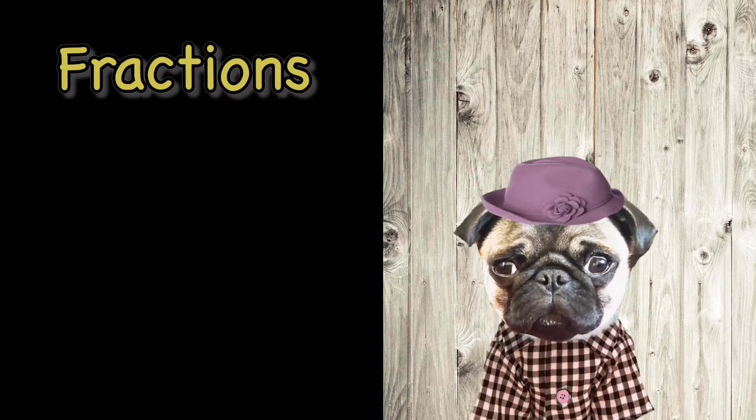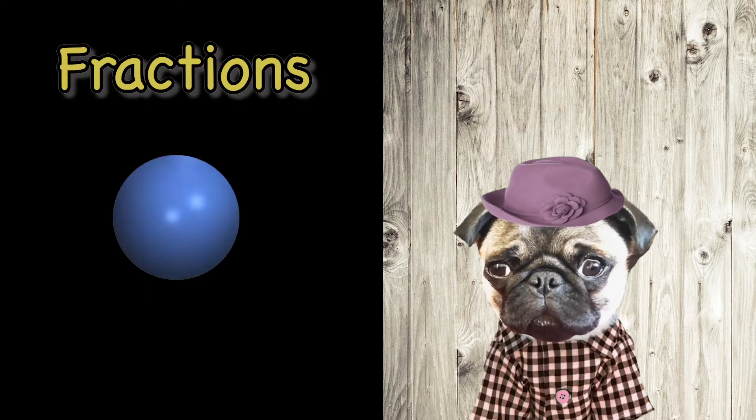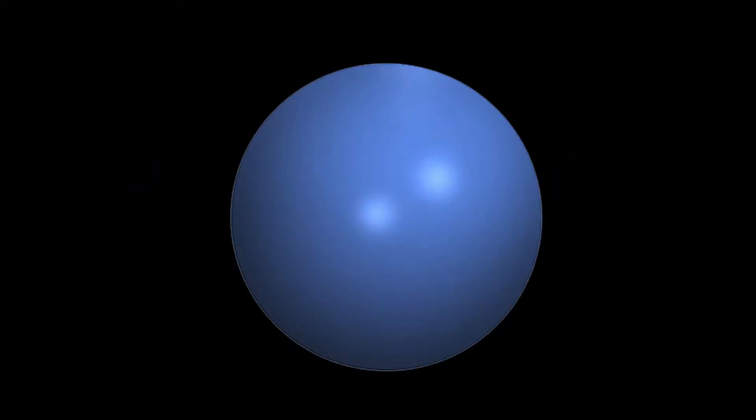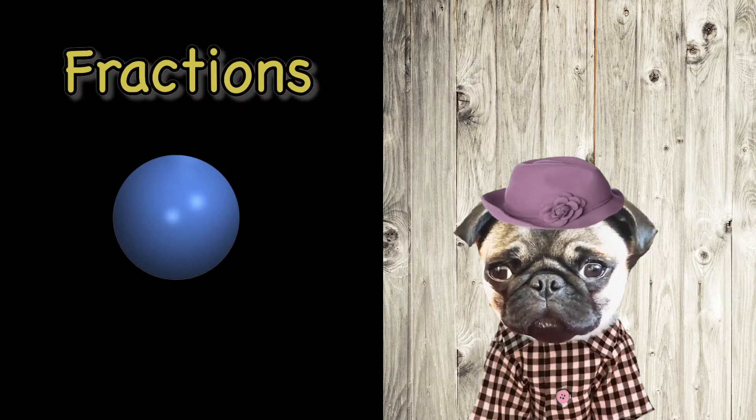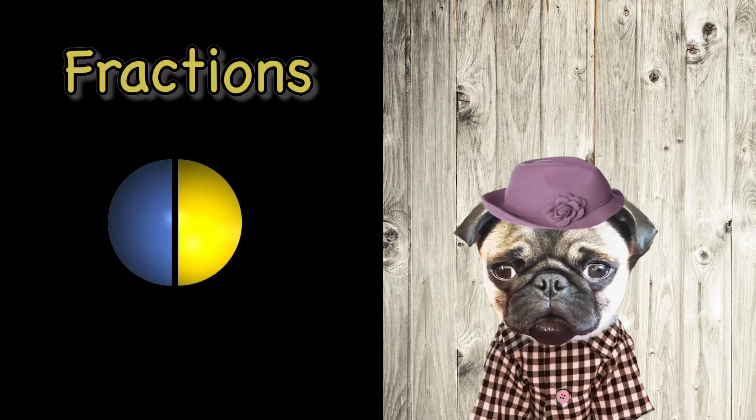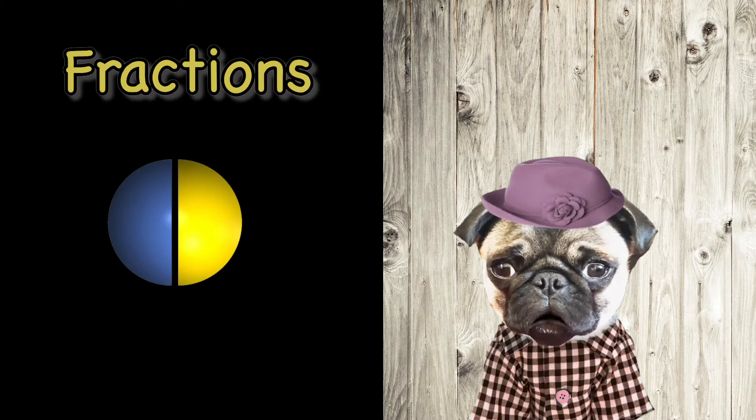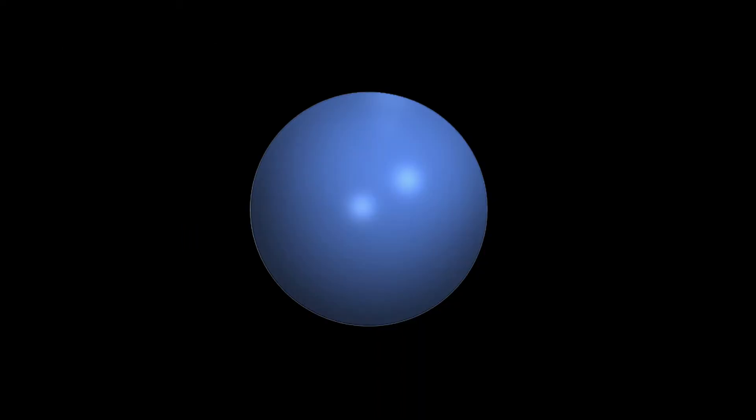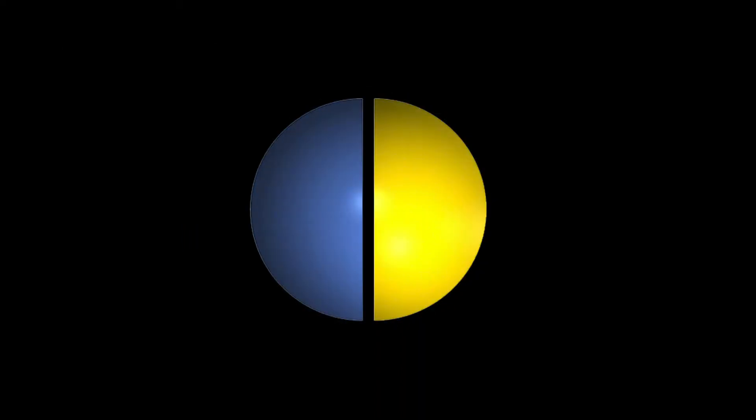A fraction shows equal parts of a whole. This circle is not a fraction, because it is a whole circle. But this circle has been divided up into a fraction. The whole circle has been divided into two parts, so each part is one half.